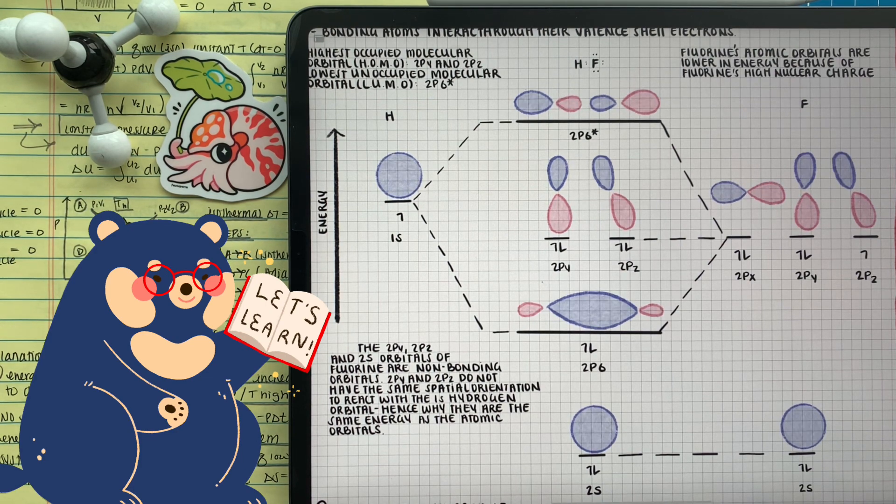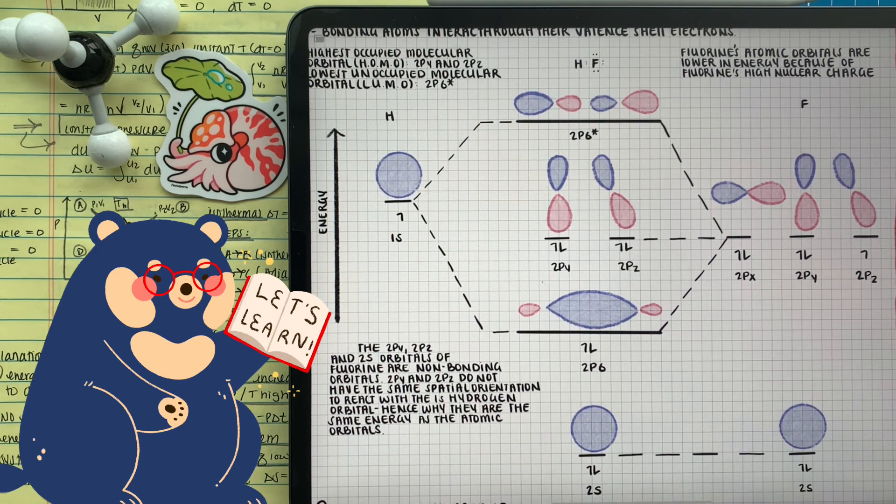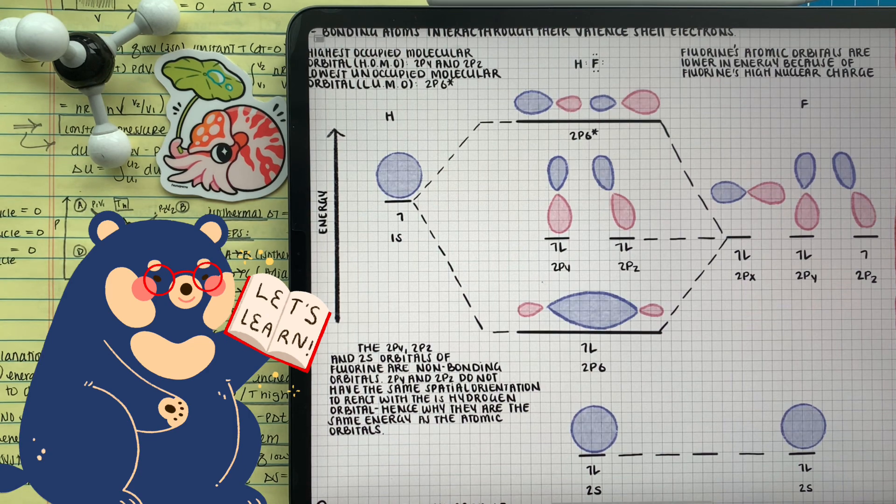These orbitals are sigma bonding, creating that bond. The orbitals that are not interacting in the molecular orbital bonding, they're called non-bonding. And it's the p orbitals in the fluorine atom that are already filled with electrons.